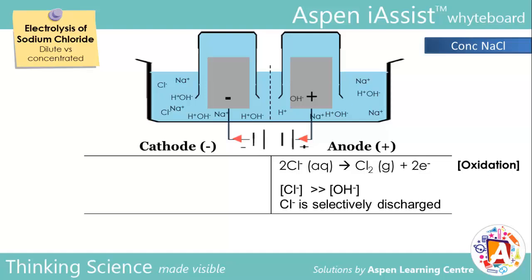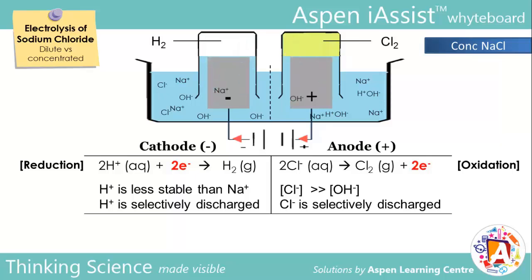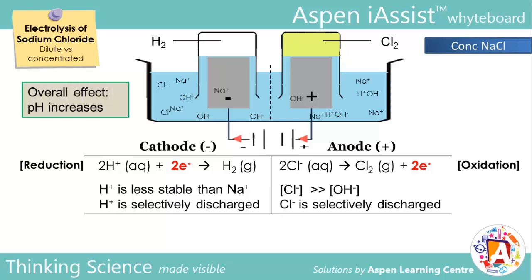The chloride ions are oxidized to form chlorine gas. At the cathode, the same reactions occur: the H⁺ ions are selectively discharged over the Na⁺ ions and are reduced to form hydrogen gas. This is because compared to H⁺, Na⁺ ions are way too stable to be selectively discharged over H⁺ despite the high concentration. Observe that for every two electrons, one volume of hydrogen gas and one volume of chlorine gas are produced. As H⁺ ions are used up at the cathode, the concentration of OH⁻ ions in the solution increases relatively, resulting in an increase in overall pH. Hence, the Na⁺ and OH⁻ ions that remain in the solution form sodium hydroxide. The ratio of hydrogen gas to NaOH to chlorine gas formed is 1:2:1.